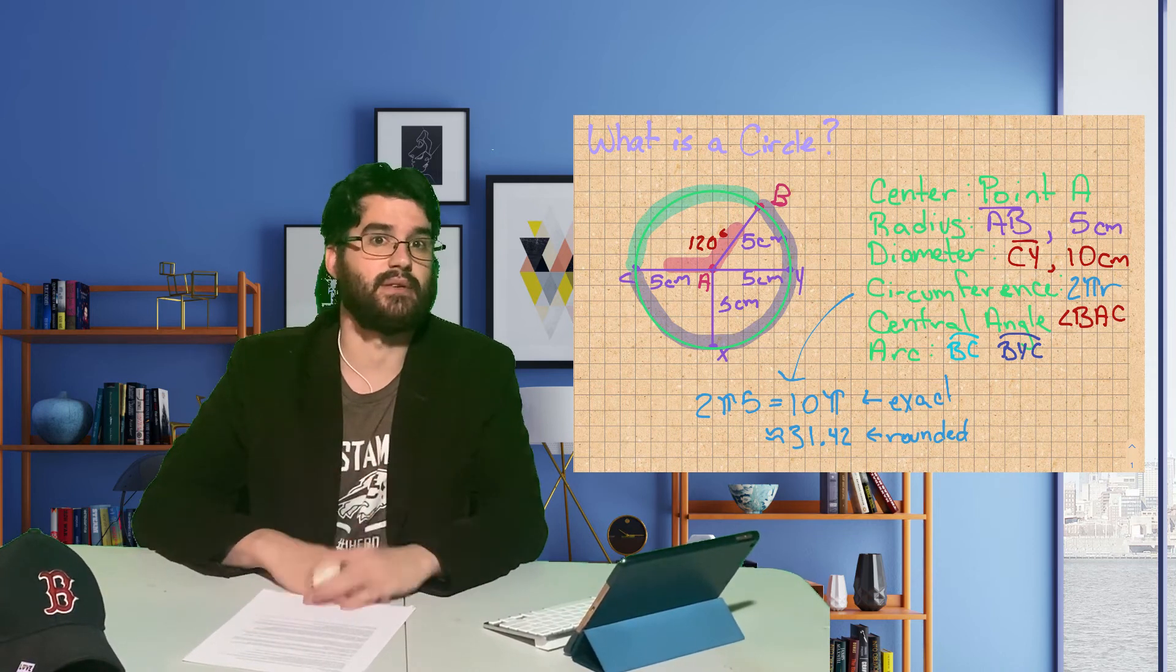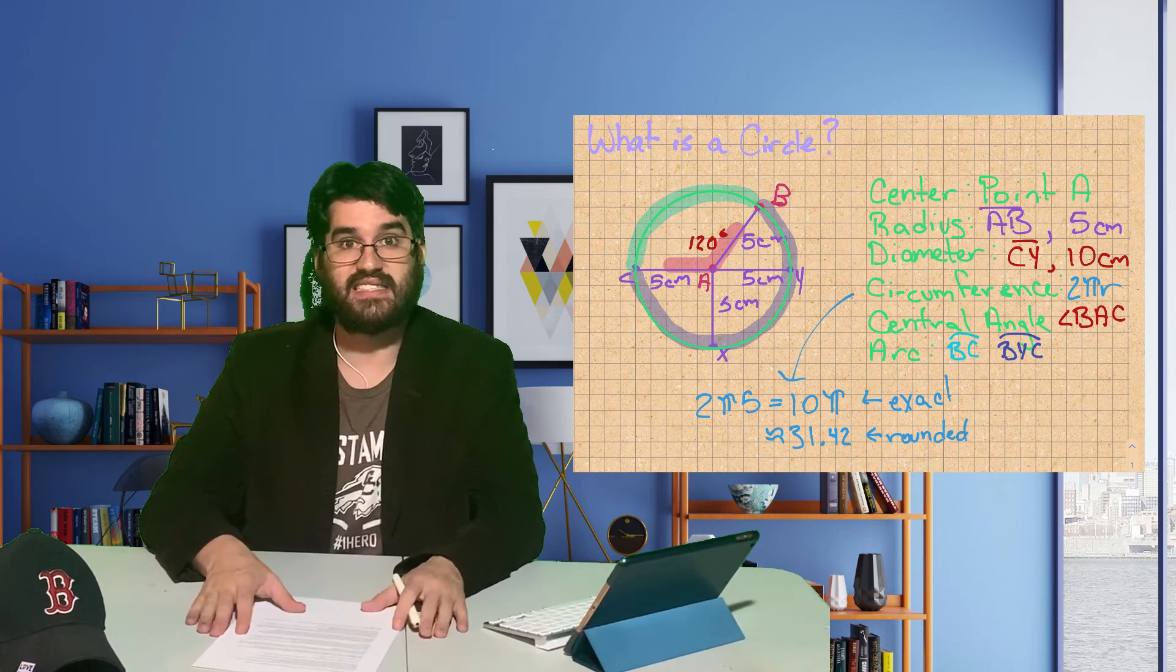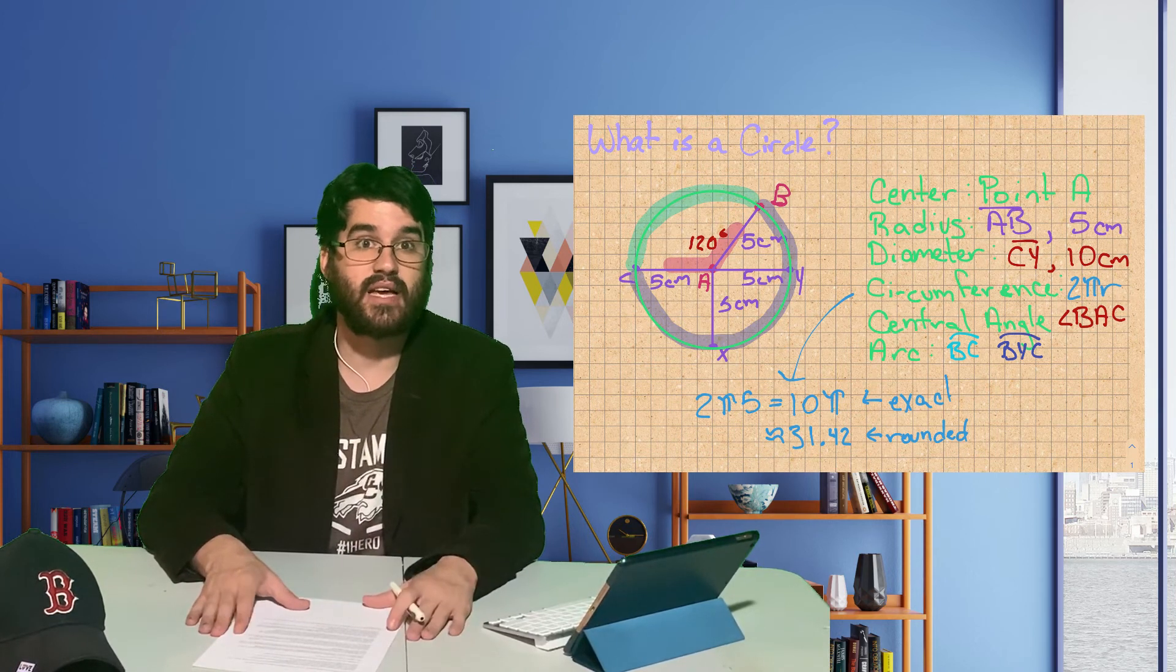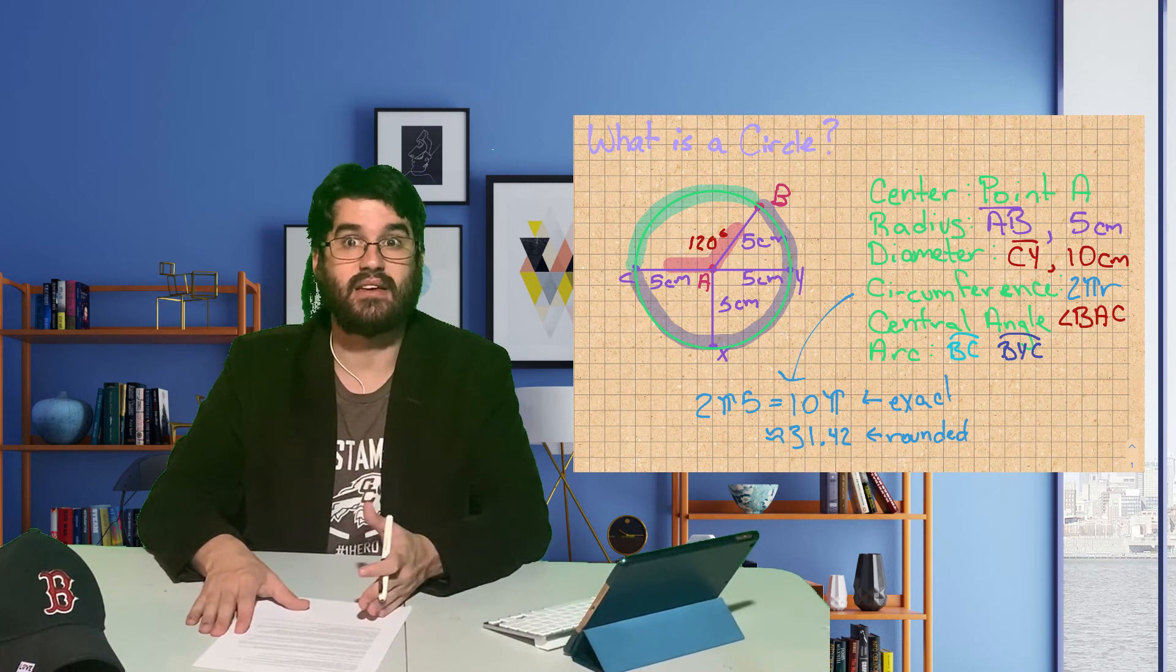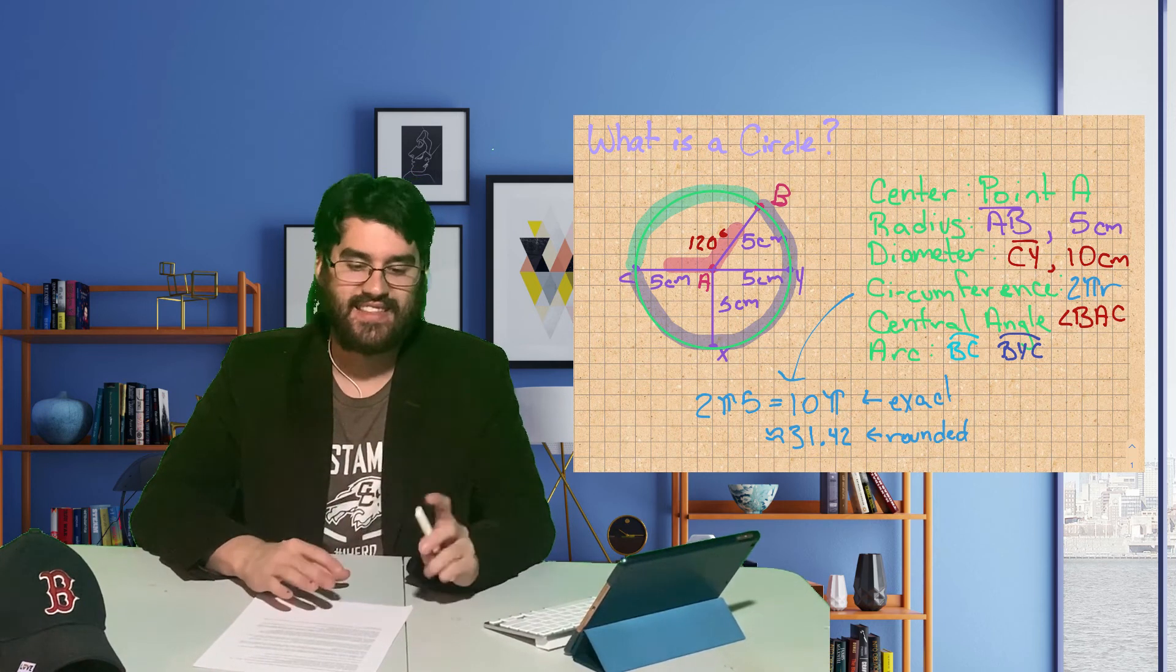Arcs are measured in degrees by the central angle that form them. So the measure of arc BC is 120 degrees, because the central angle, angle BAC, as we said earlier, is also 120 degrees. Thanks.